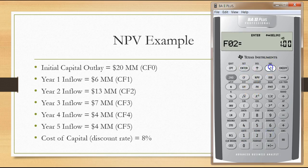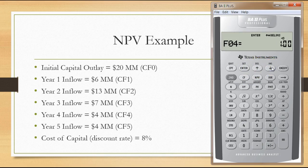Cash flow number two is thirteen million dollars — we enter thirteen million and hit enter. This happens once, so we leave F02 as one. Cash flow number three is seven million dollars — we enter seven million, and F03 is one. Cash flow number four is four million dollars — we enter four million. Now for the frequency of this fourth cash flow, since we have four million dollars happening twice in a row, we could change the frequency to two, but in this first walkthrough I'll leave it as one. So cash flow five is again four million dollars, with a frequency of one.